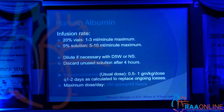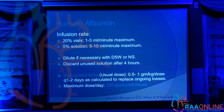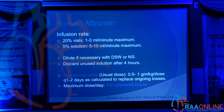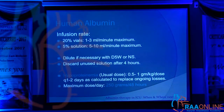For infusion rates: the 20% solution should be given at a very slow rate of 1 to 2 ml per hour, or a daily rate of 3 ml per hour. The 5% solution should be used at 5 to 10 ml per minute, with a maximum — you should not use more than 10 ml per minute.